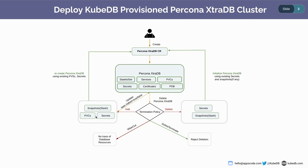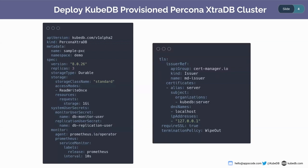This is the architecture of the PerconaXtraDB cluster custom resource. Let's look into a sample YAML. The API version is kubedb.io/v1alpha2 and the resource name is PerconaXtraDB. The resource name is sample-pxc and it's in the demo namespace. We will deploy PerconaXtraDB version 8.0.26 with three replicas. We are using storage type durable with storage class standard and a resource request of one gigabyte.